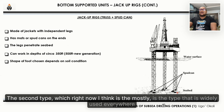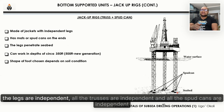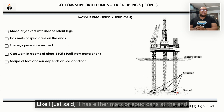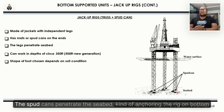The second type — the truss or lattice type — is now the most widely used because it can operate on both flat and undulating surfaces. All the legs, trusses, and spud cans are independent. Most commonly seen with spud cans rather than mats, the spud cans penetrate the seabed, anchoring the rig on the bottom.